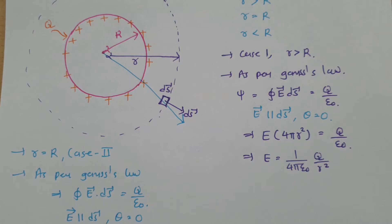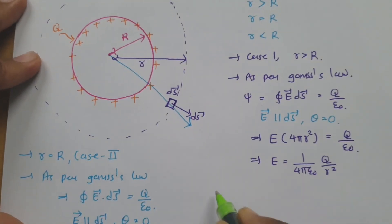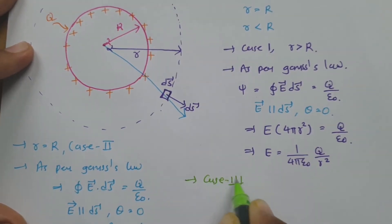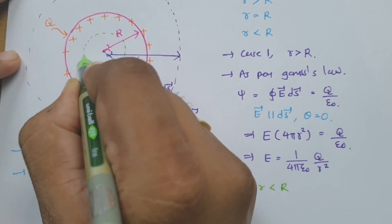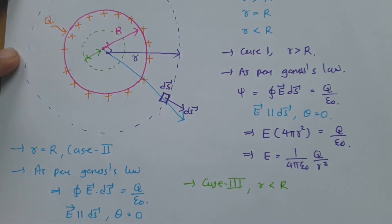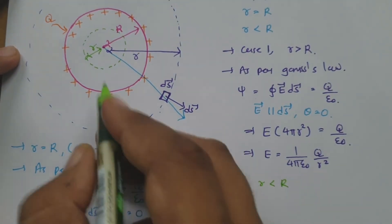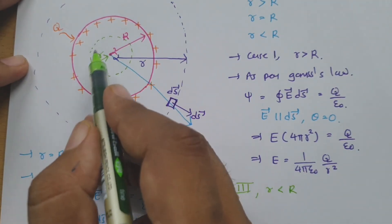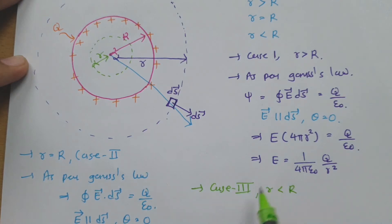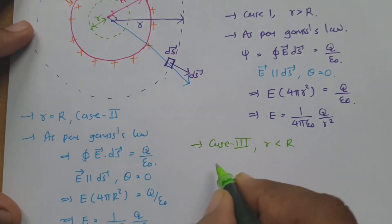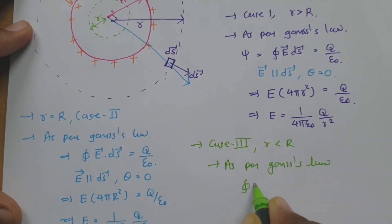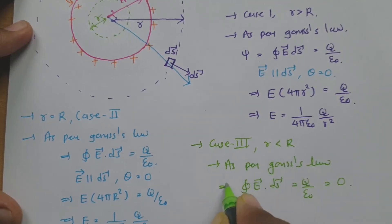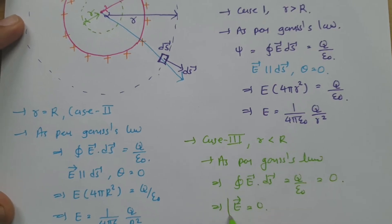Now for case three: small r less than capital R, meaning inside the sphere. If you apply Gauss's law inside, there is no charge enclosed by this smaller-radius surface. So, the surface integral of E dot dS equals Q by epsilon zero equals zero. This means the electric field inside is zero.